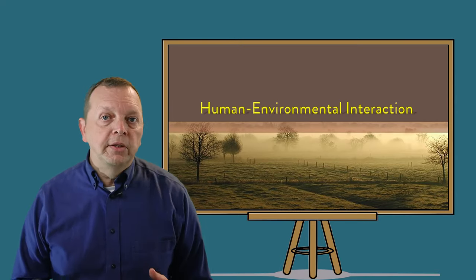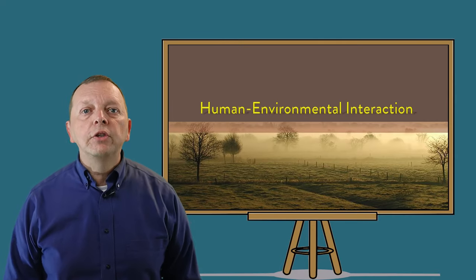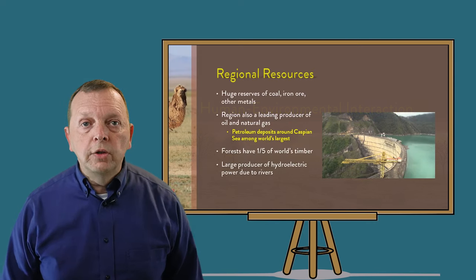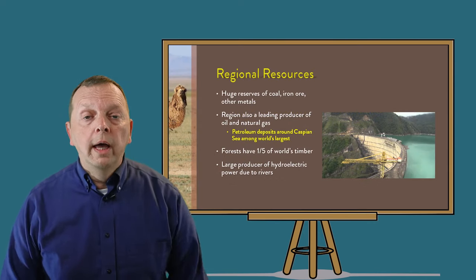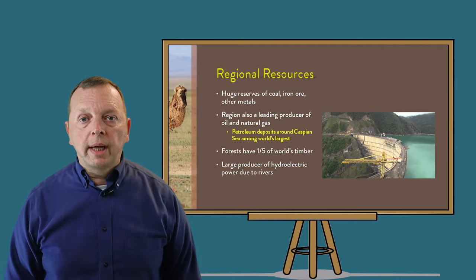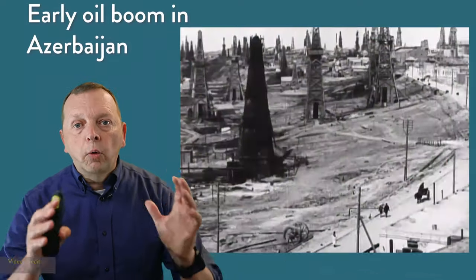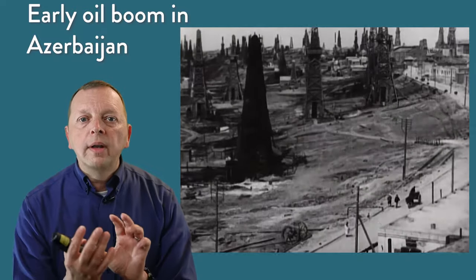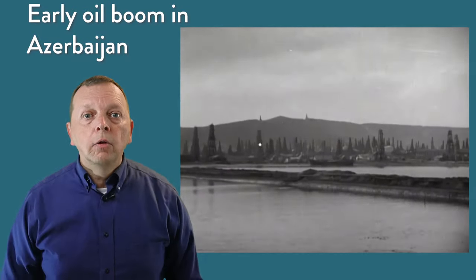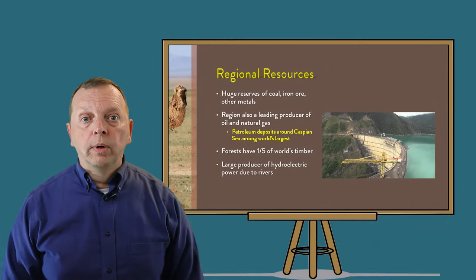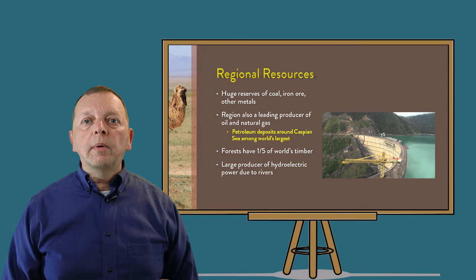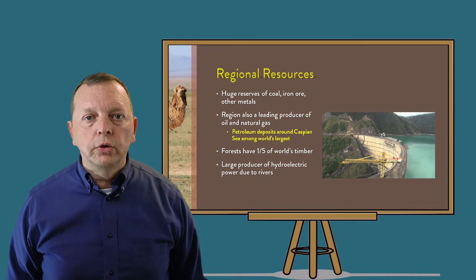While the physical terrain of these regions makes it difficult for people to live, the region isn't without its resources. The region has large reservoirs of coal, iron ore, and other metals. The region is also a leading producer of oil and natural gas, especially in and around the Caspian Sea, where 9% of all the world's oil and natural gas reserves lie. Lumber is also another key resource — Russia's Siberia is where we find 20% of all the world's timberland.